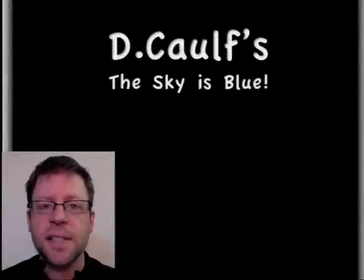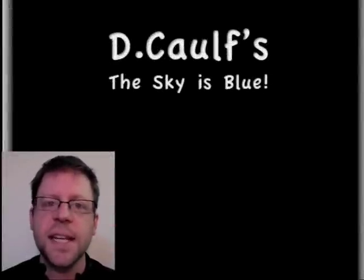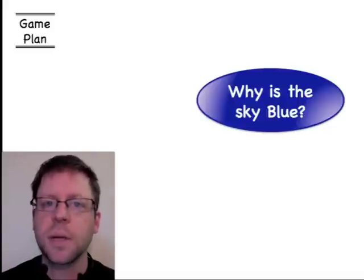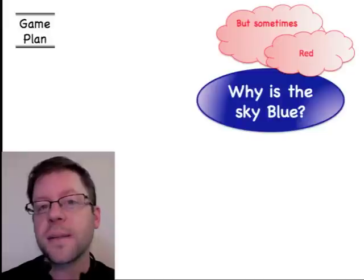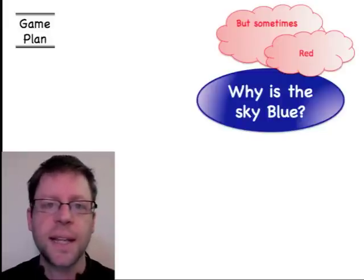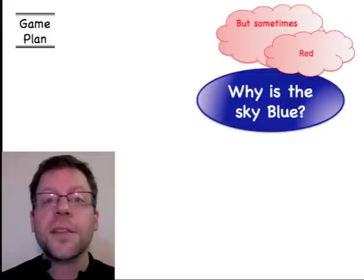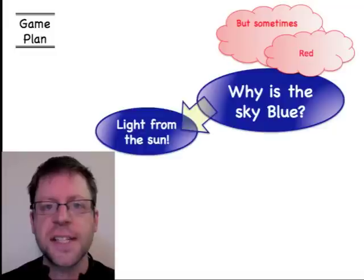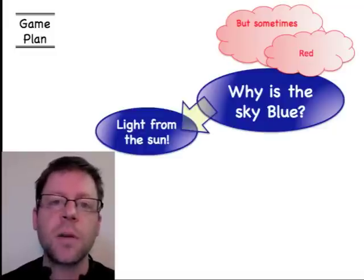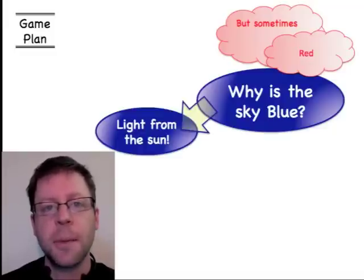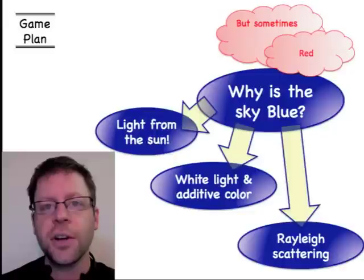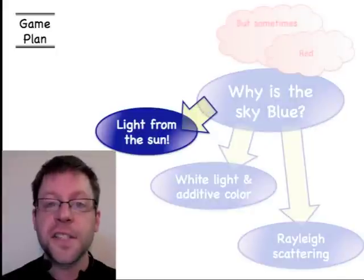Today we're going to talk about why the sky is blue — and not only blue, but also why we sometimes see reds and yellows depending on conditions. There are really three things you need to understand: first, how light gets from the Sun to us and the geometry involved; second, understanding white light; and third, Rayleigh scattering, which is the fundamental reason for the blue sky.